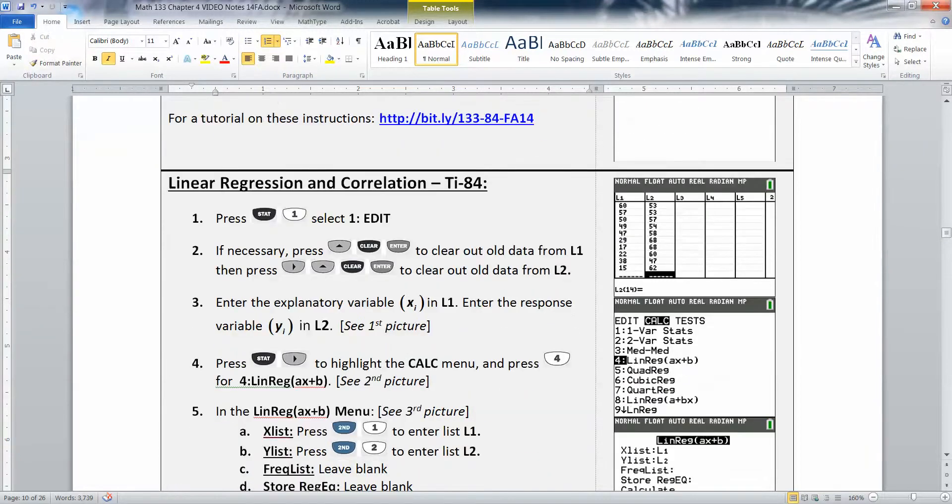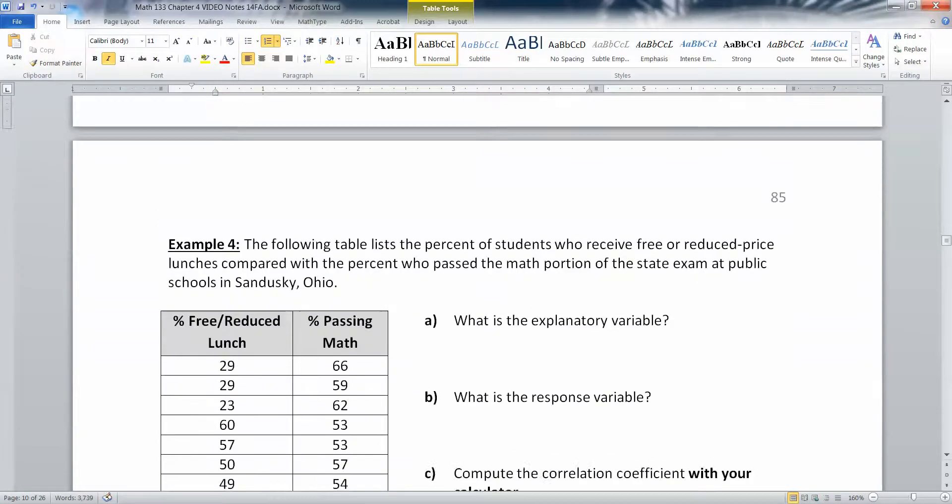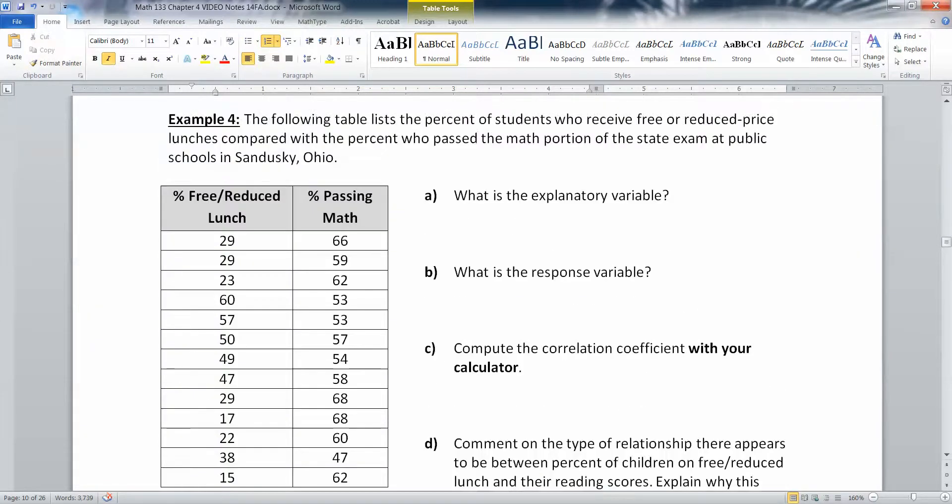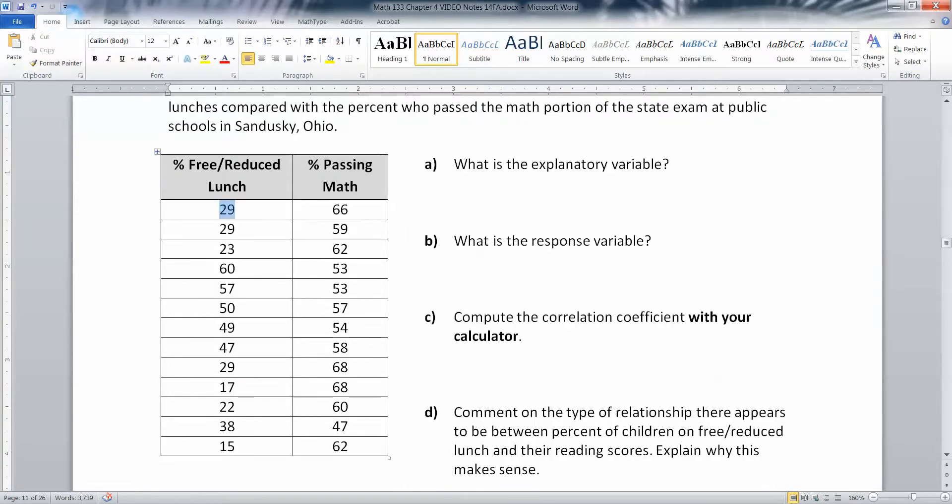Once we've done that, then we have to enter your data. I've got a data set right here. This table lists the percent of students who receive free or reduced price lunches compared with the percent who pass the math portion of the state exam at public schools in Sandusky, Ohio. Here's a school that had 29 percent of its students on free reduced lunch and 66 percent passed the math test.